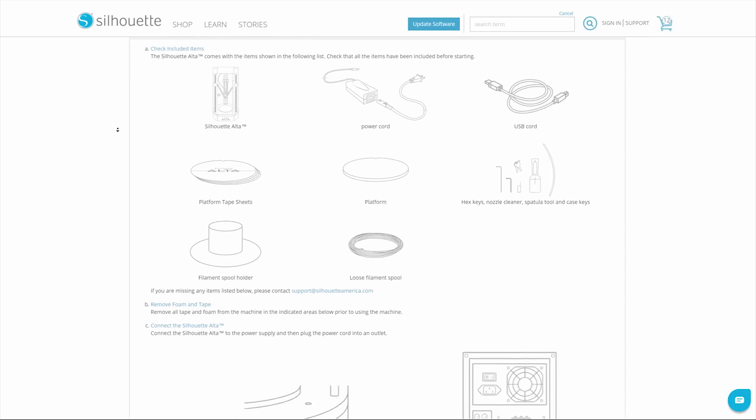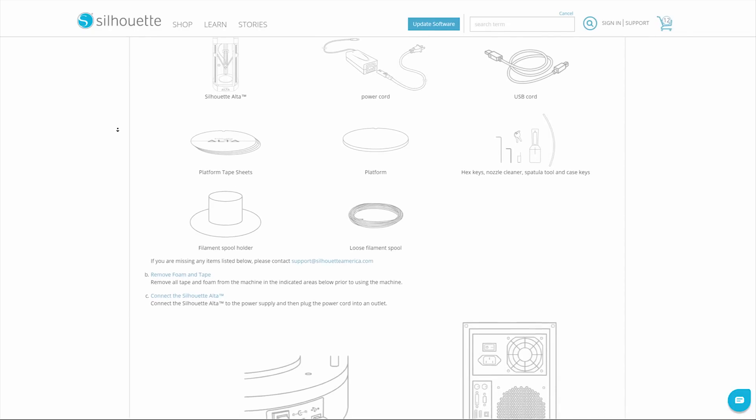Check the box contents and set up the Silhouette Alta. Once your machine has been registered, check to make sure that you have all of the items that should be in the box.